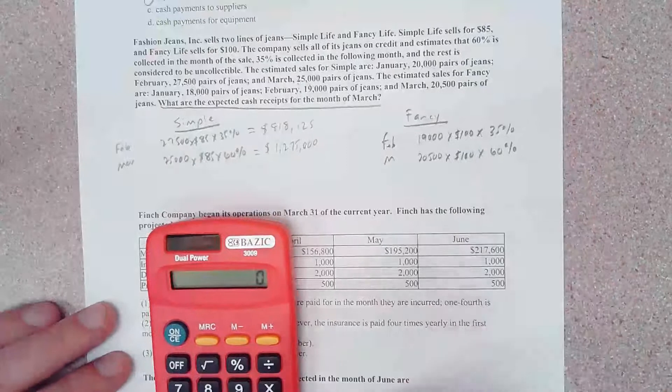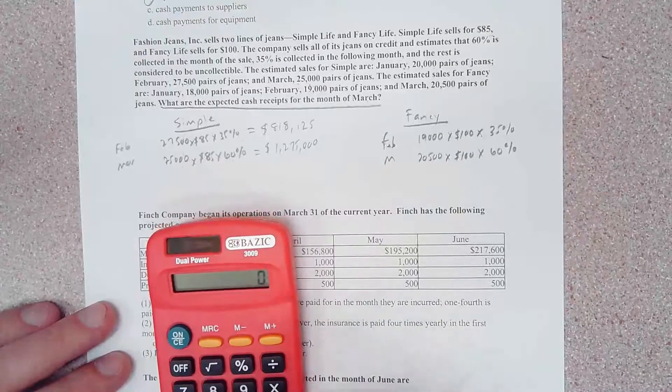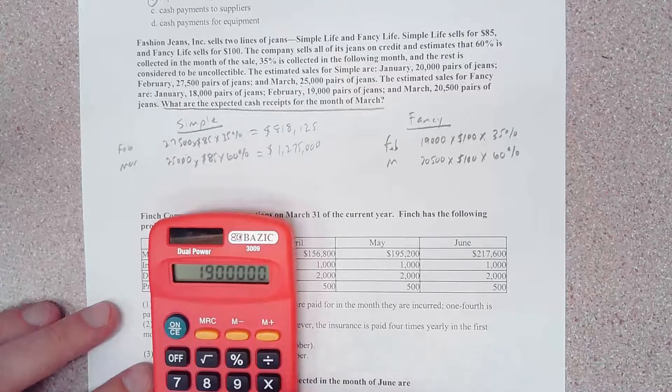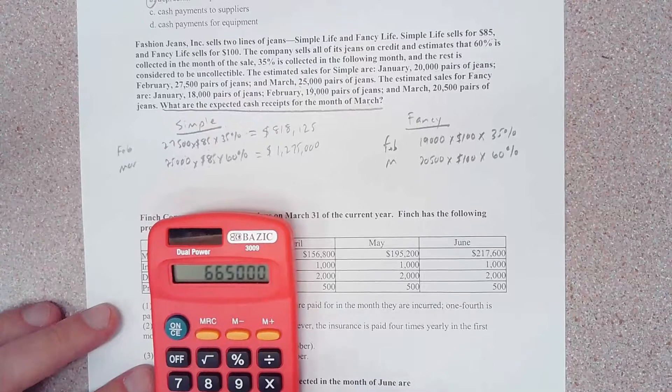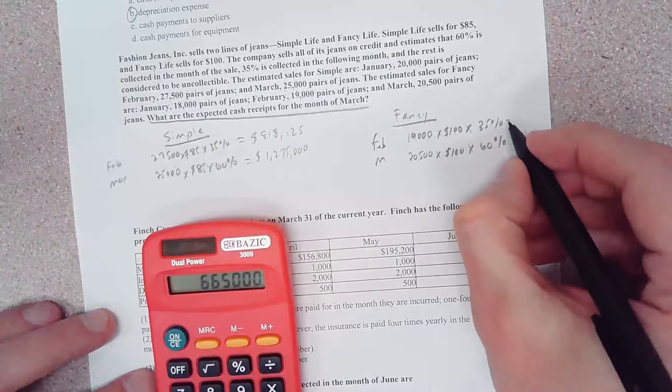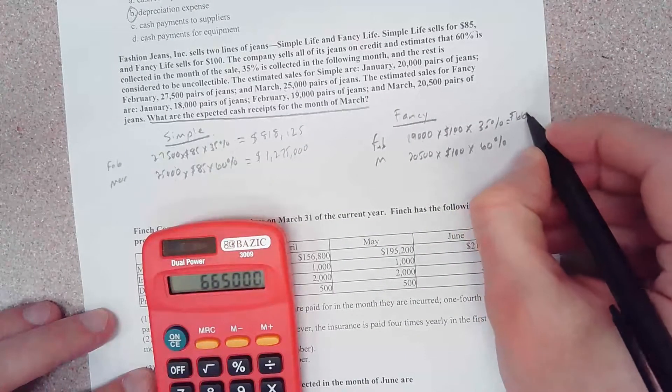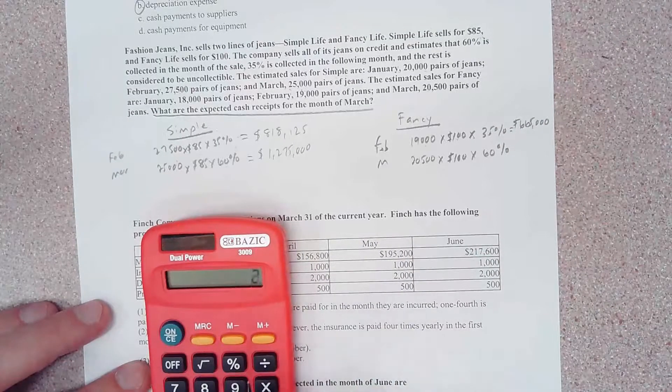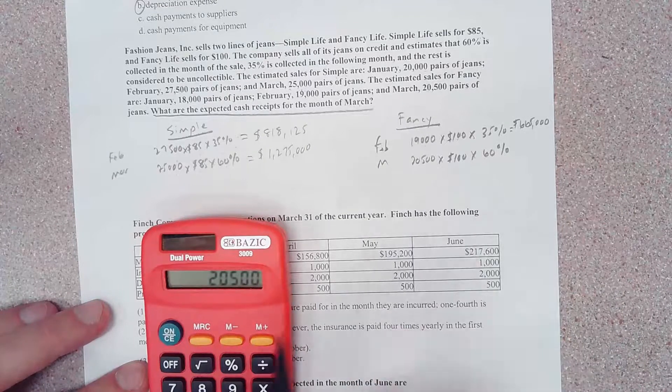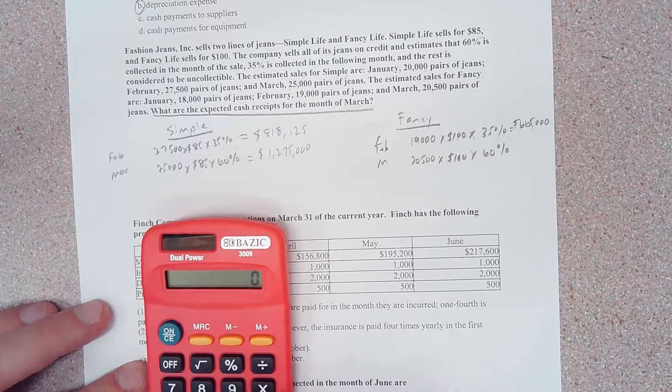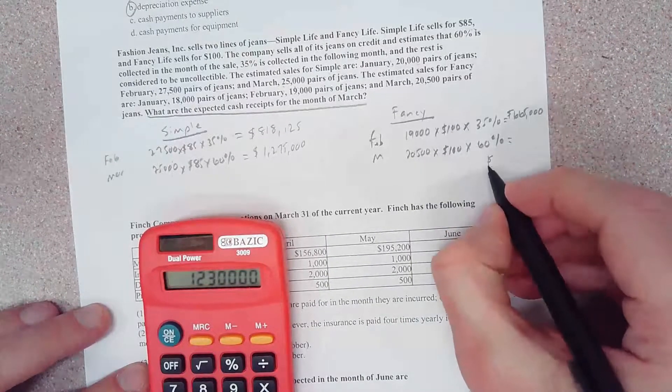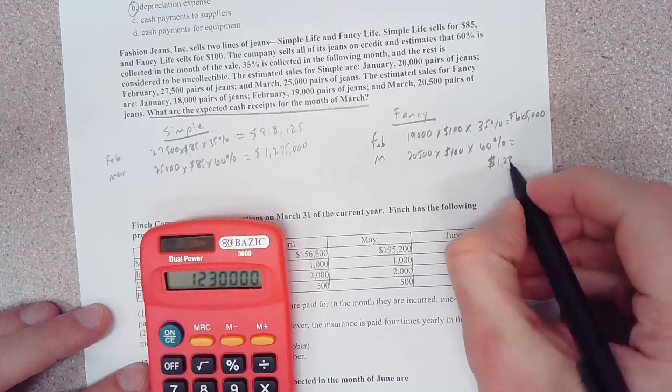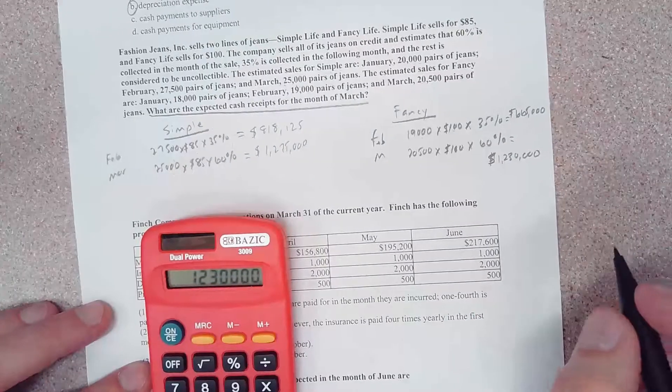Looking over here we have 19,000 pairs of the Fancy jeans that we're collecting on from February. If we execute this out, we've got $665,000. And then in March we sold 20,500 times $100 a pair times 0.6 equals 1,230,000.